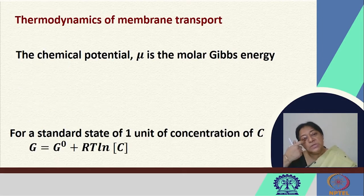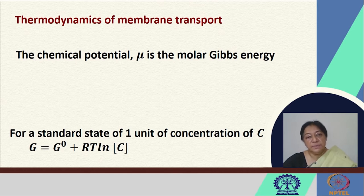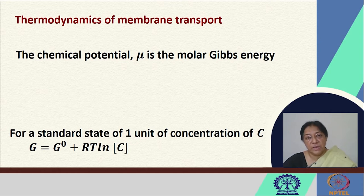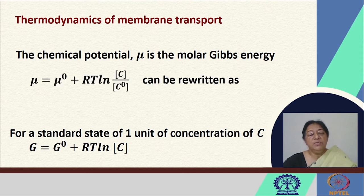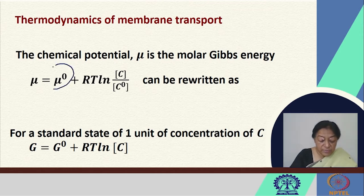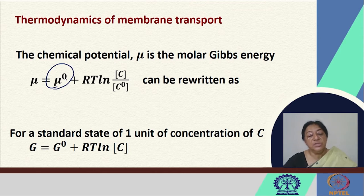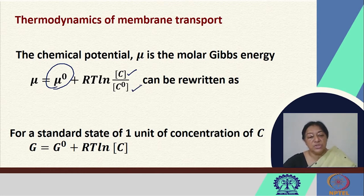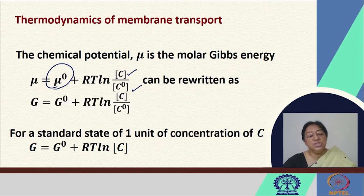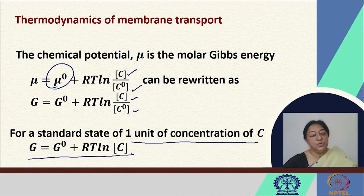When we look at the thermodynamics of membrane transport, we have the chemical potential. The chemical potential is the molar Gibbs energy, and the transfer is always from a higher chemical potential to a lower chemical potential — in this case, referring to the concentration of ions as they are transported across the membrane. Looking at the standard expression for chemical potential, we have the standard chemical potential given by mu-zero, the concentration C, and the standard state concentration C0. This gives us G equals G0 plus RT ln(C/C0), which reduces to a simpler form when considering one unit of concentration.